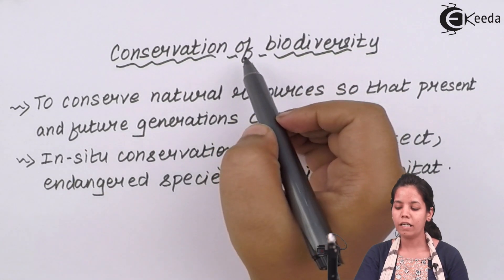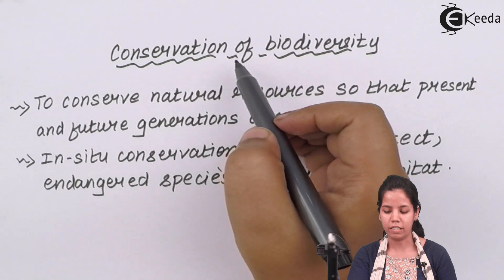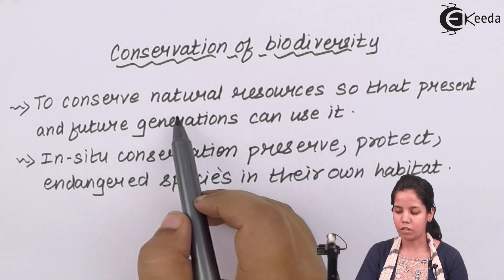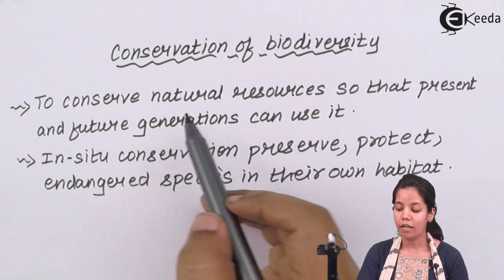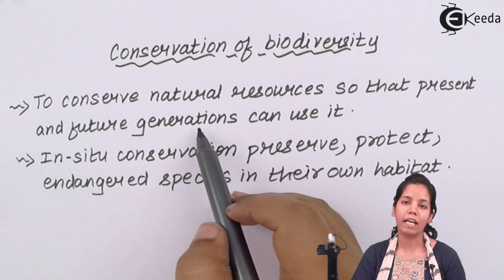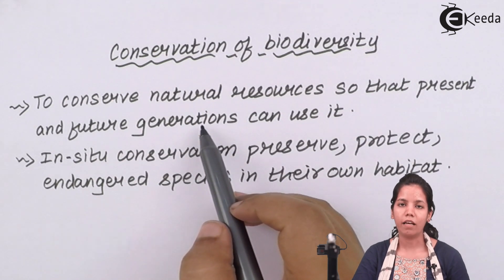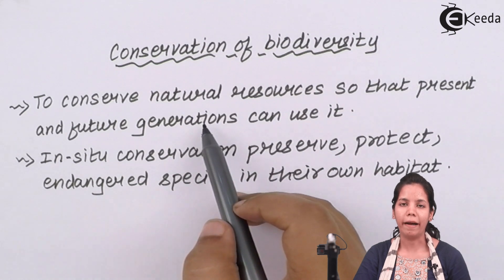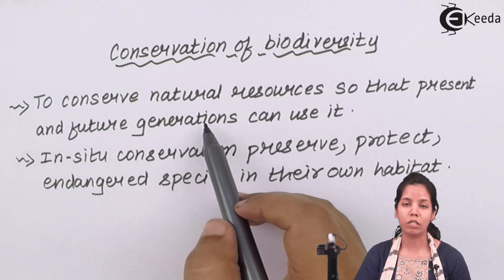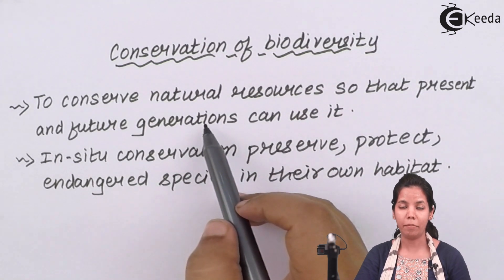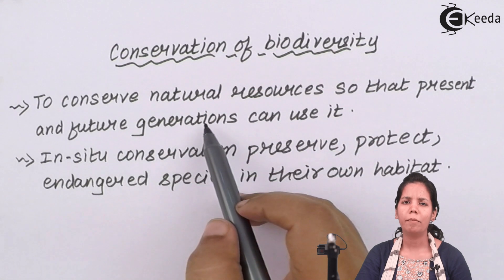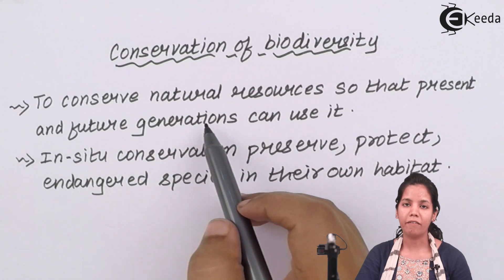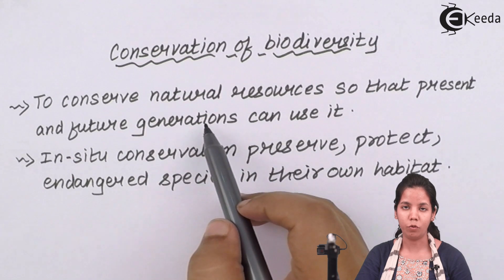When I talk about conservation of biodiversity, it means to conserve natural resources so that the present and future generations can use them wisely. It is up to us how we use the biodiversity and natural resources — which include different animals, birds, reptiles, and plants — so that everybody present on earth till the end of the universe can use them wisely and properly.